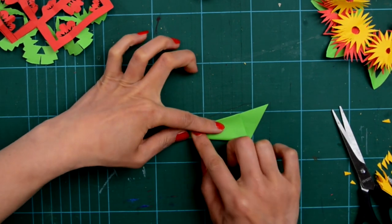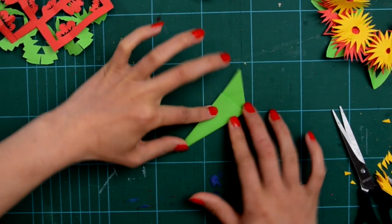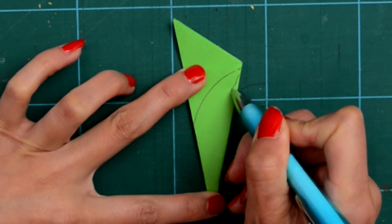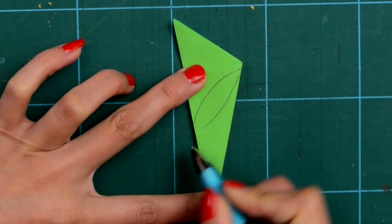And half again. Just draw really simple leaves and make sure the middle is connected.